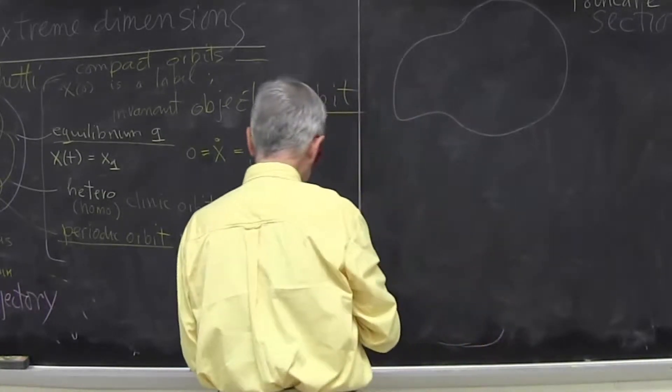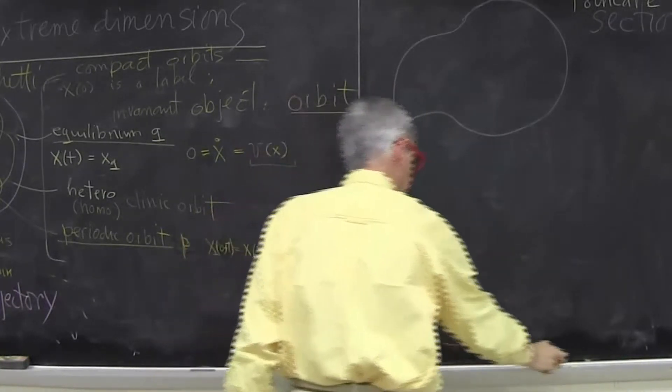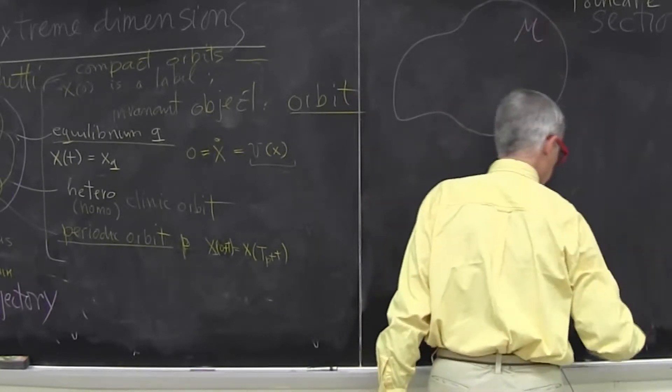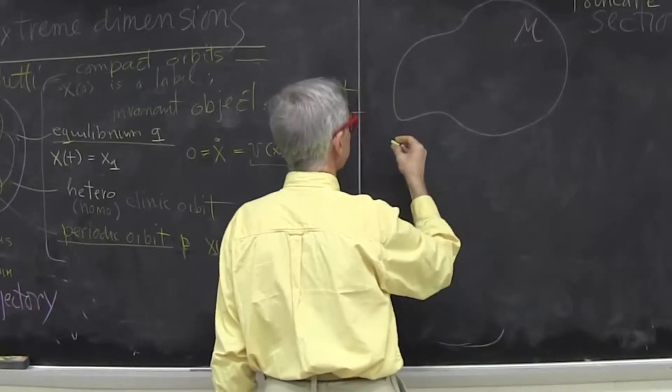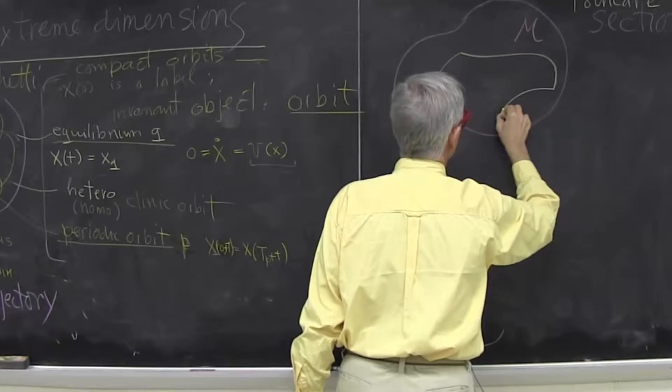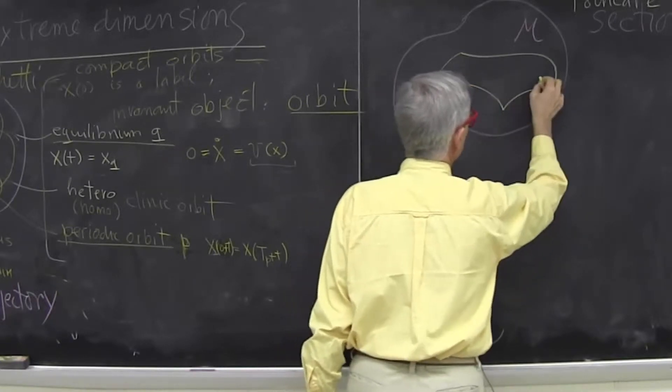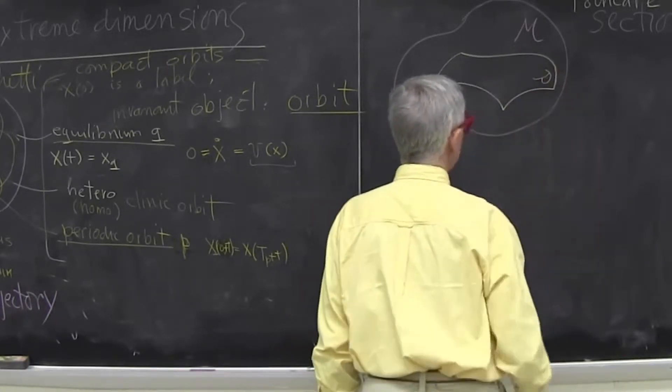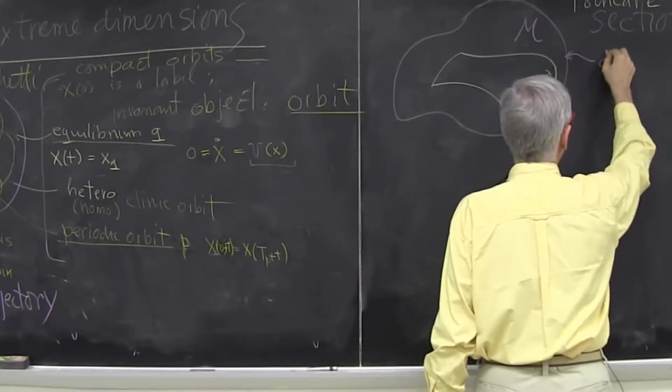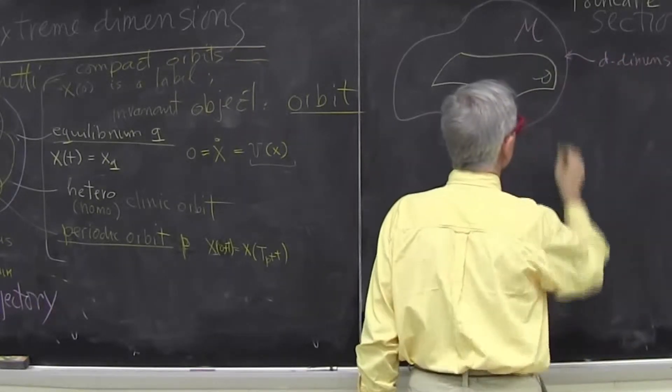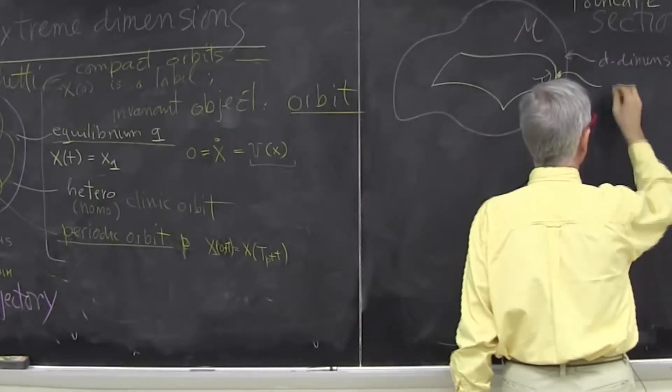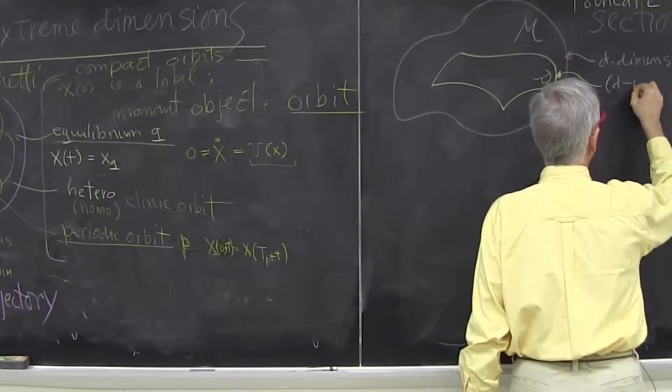So what is the Poincaré section? In our space M, curly M for the manifold on which all possible states of the system live, I design a hypersurface, which I'll call curly P for Poincaré. And now this space is D dimensional and the hypersurface will be D minus one dimensional.